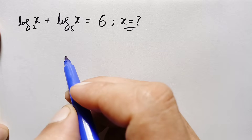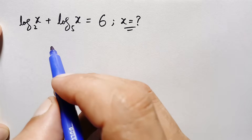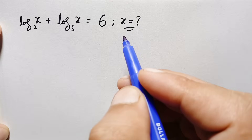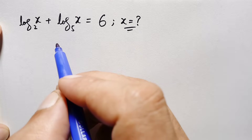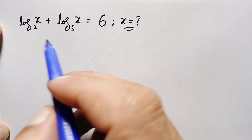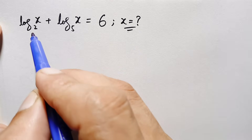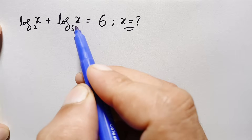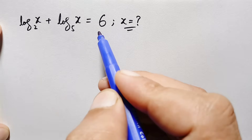Hello everyone, you are welcome. How to solve and find the value of x in this interesting logarithm math problem: log of x with base 2 plus log of x with base 5 is equal to 6.